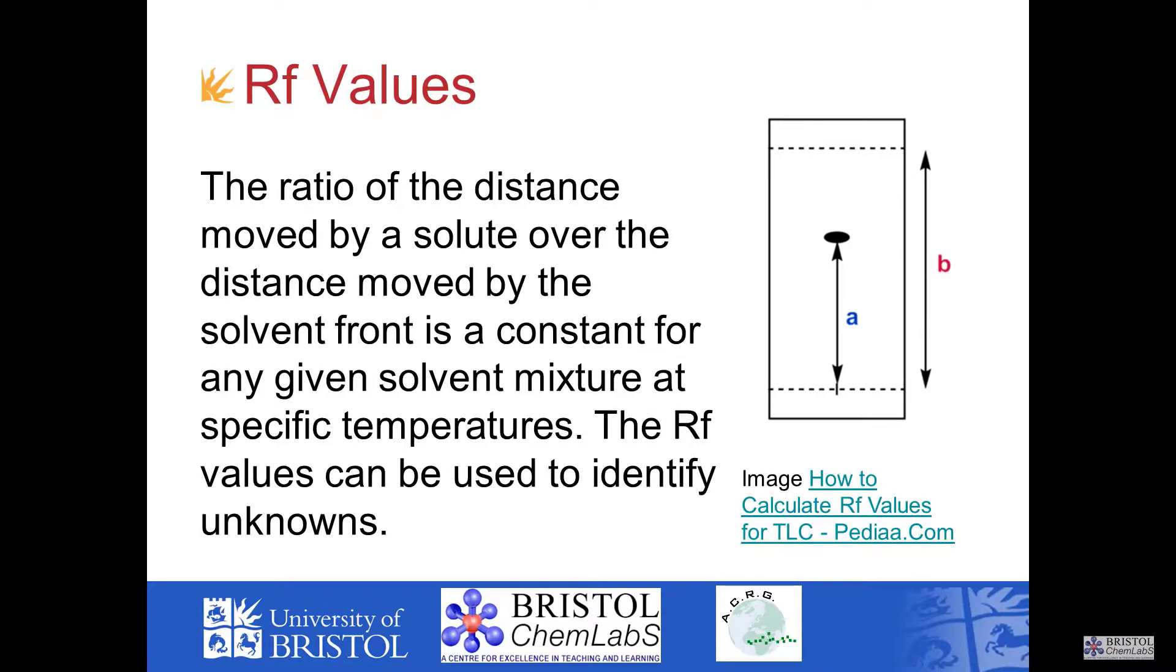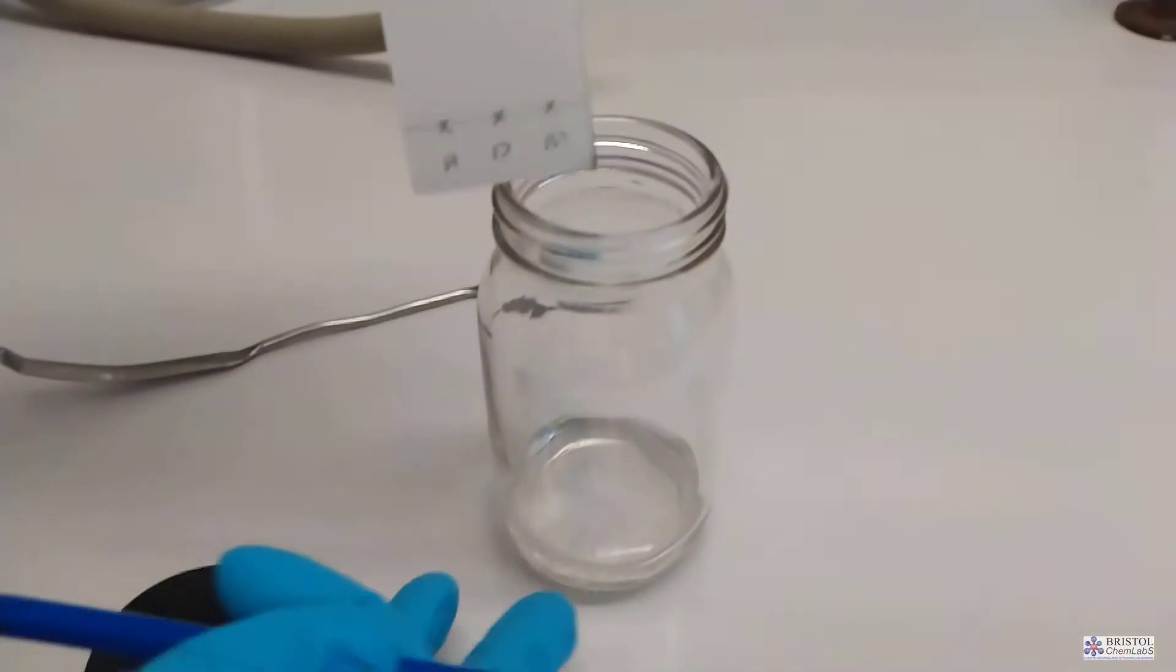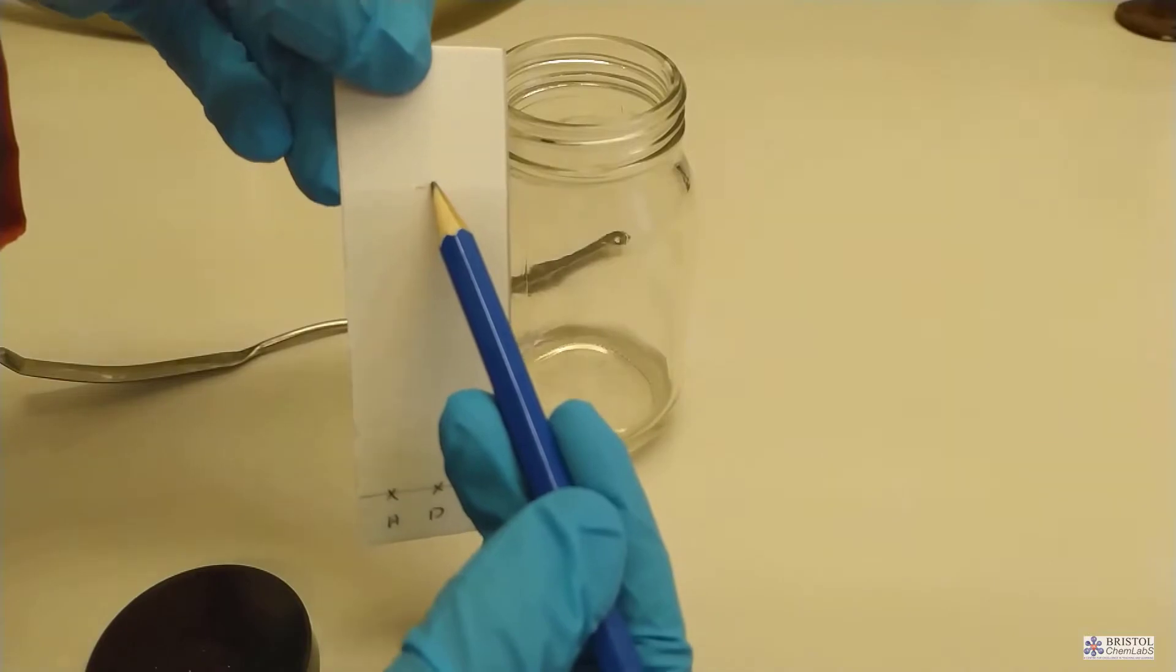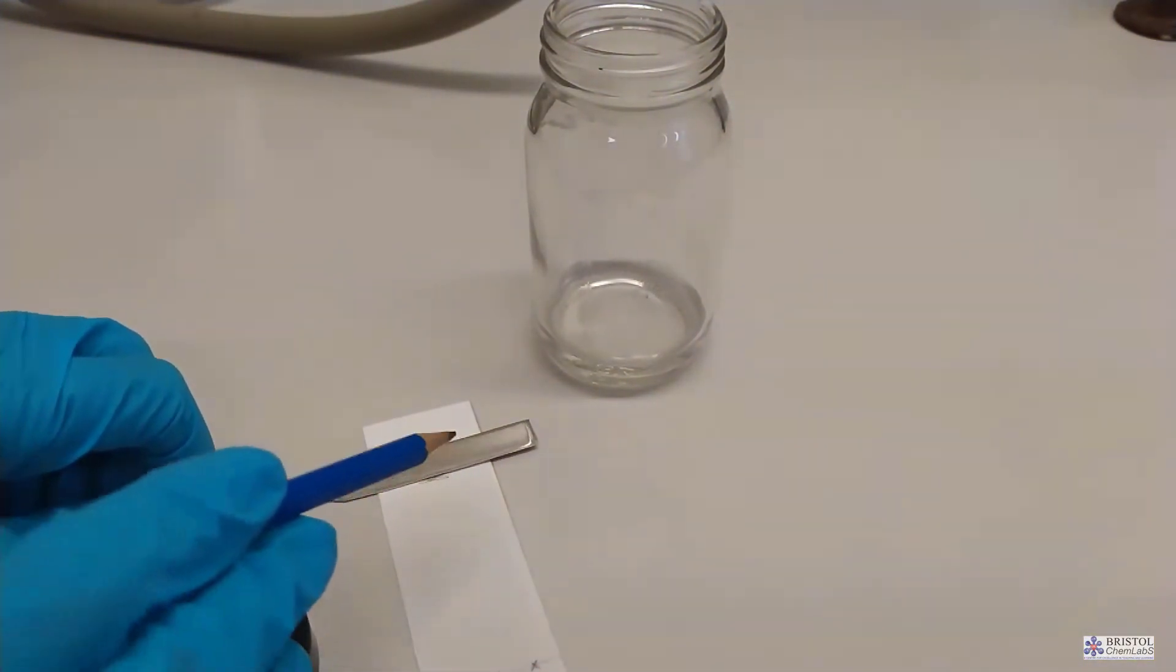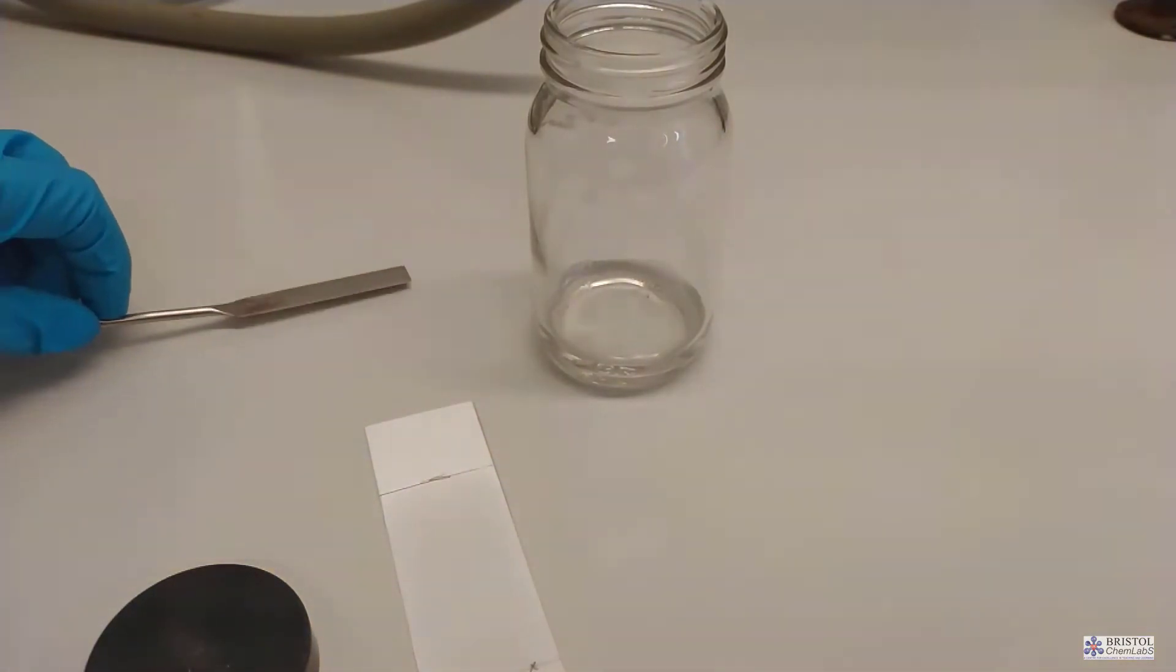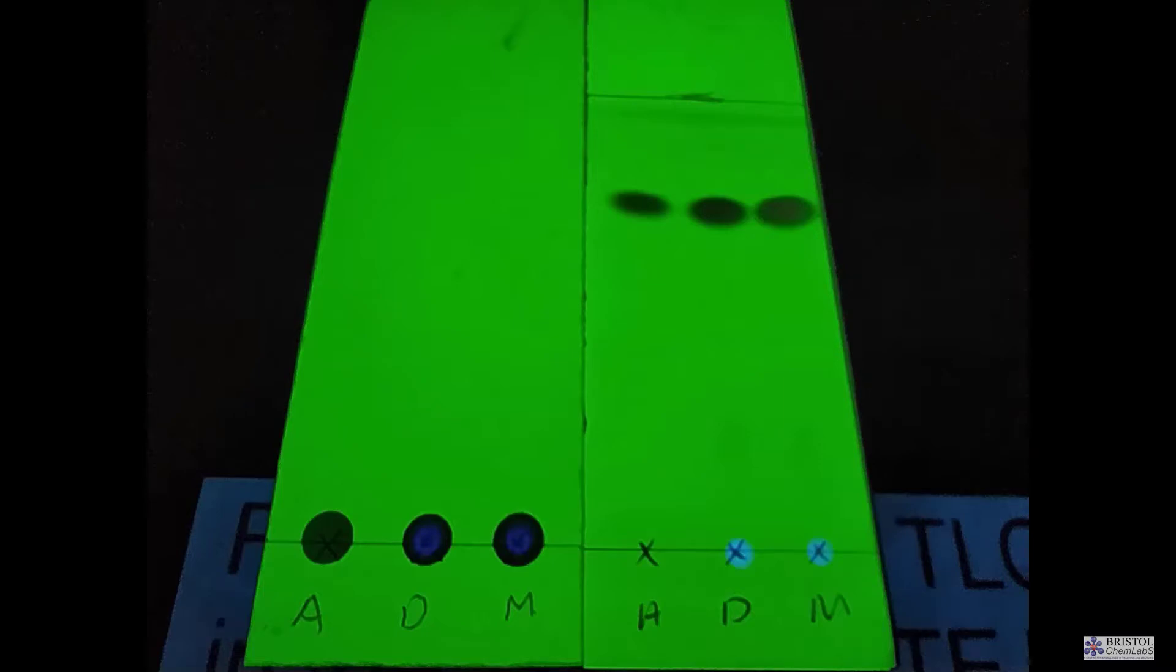The plate is then left to dry and put back under the ultraviolet light and the positions of where the spots have moved is marked. If the product contained a mixture we would see a dot for each component. If the product was not benzocaine the dot or small circle would not be exactly in the same position as the pure benzocaine sample it was run against. TLC plates tend to be sharp and so they should be disposed of in a sharps waste bin.